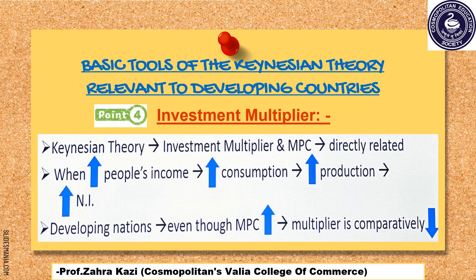Point number 4 is Investment Multiplier. According to Keynesian Theory, Investment Multiplier and MPC, that is Marginal Propensity to Consume, are directly related. As the income of the people increases, they start consuming more, and thus more income goes on consumption. That is the reason there is increase in production, further leading to increase in national income. But on the other hand, in developing economies, though MPC is high, the multiplier is comparatively lower.